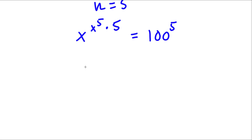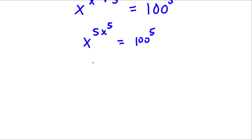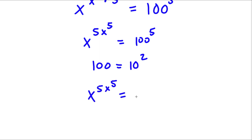Now, 5 times x to the power of 5 is 5x to the power of 5. So I have x to the power of 5x to the power of 5 is equal to 100 to the power of 5. Now, 100 is the same thing as 10 squared. So if I substitute this value in for 100, I get x to the power of 5x to the power of 5 is equal to 10 squared to the power of 5.